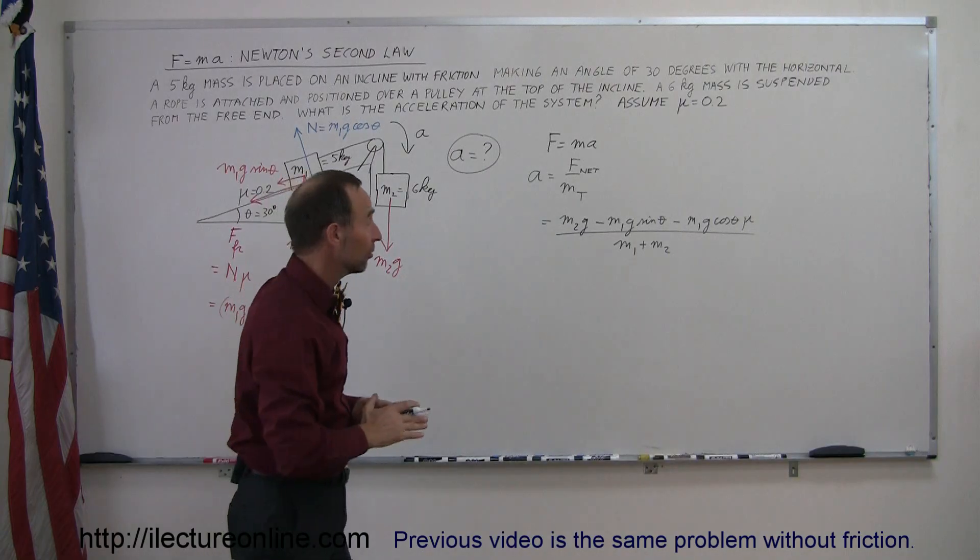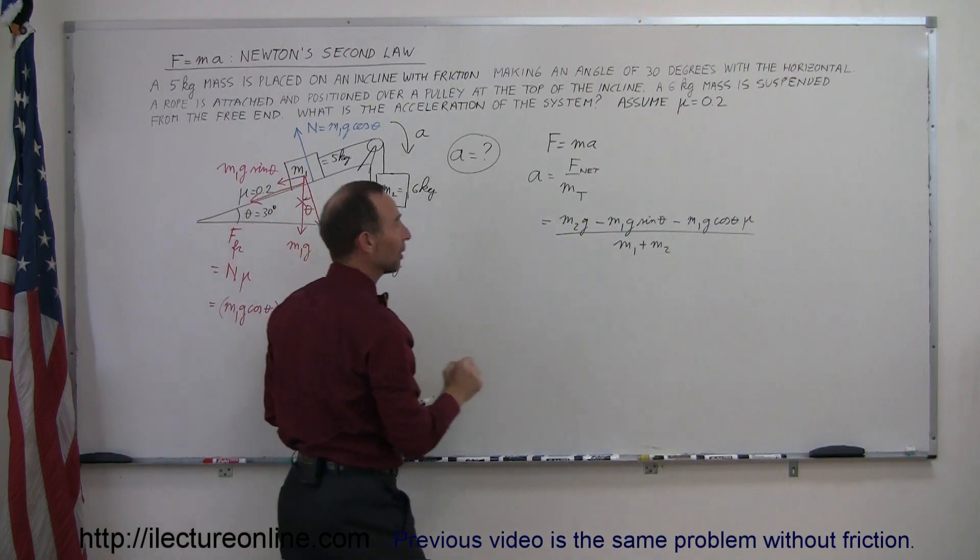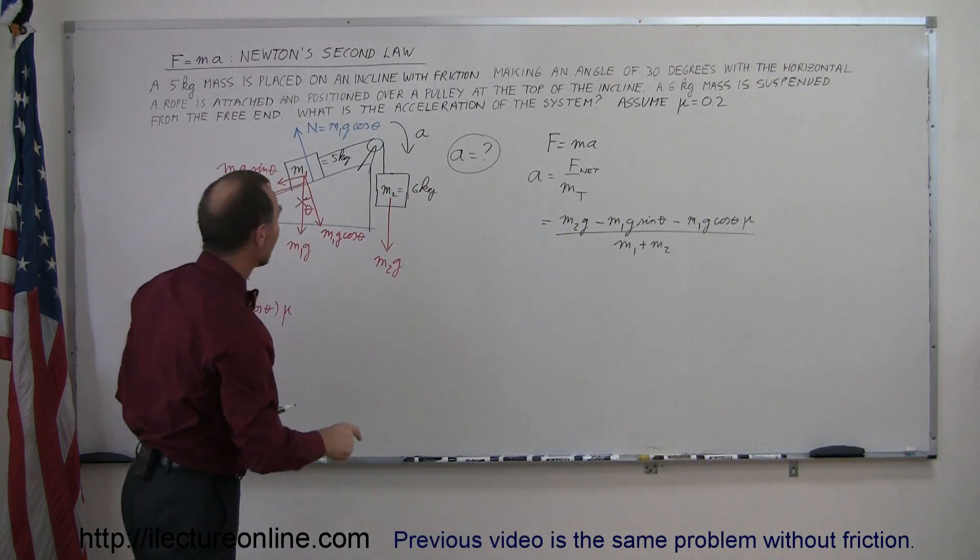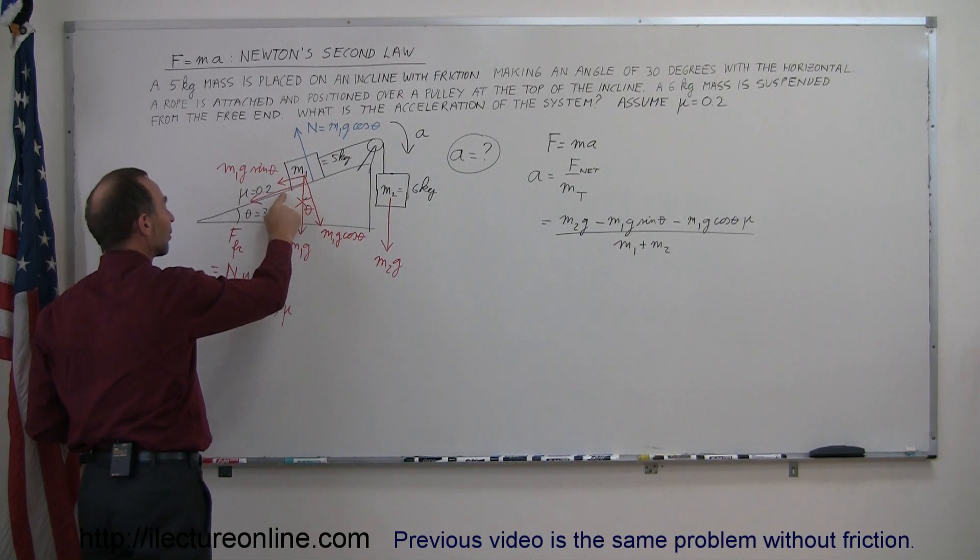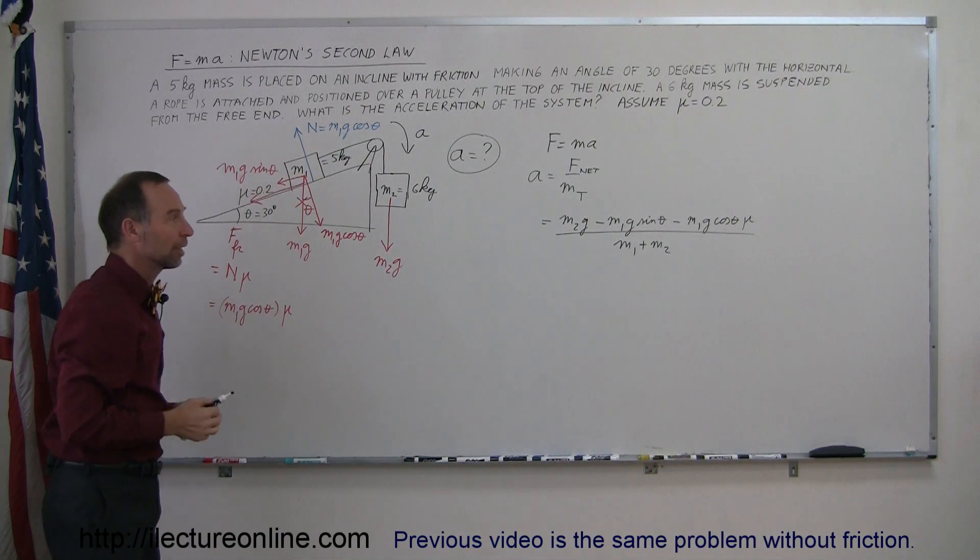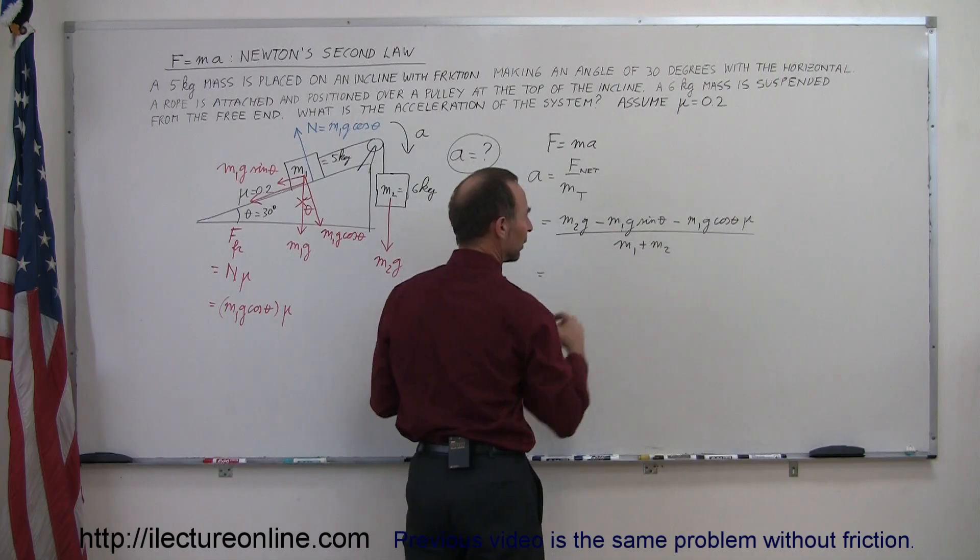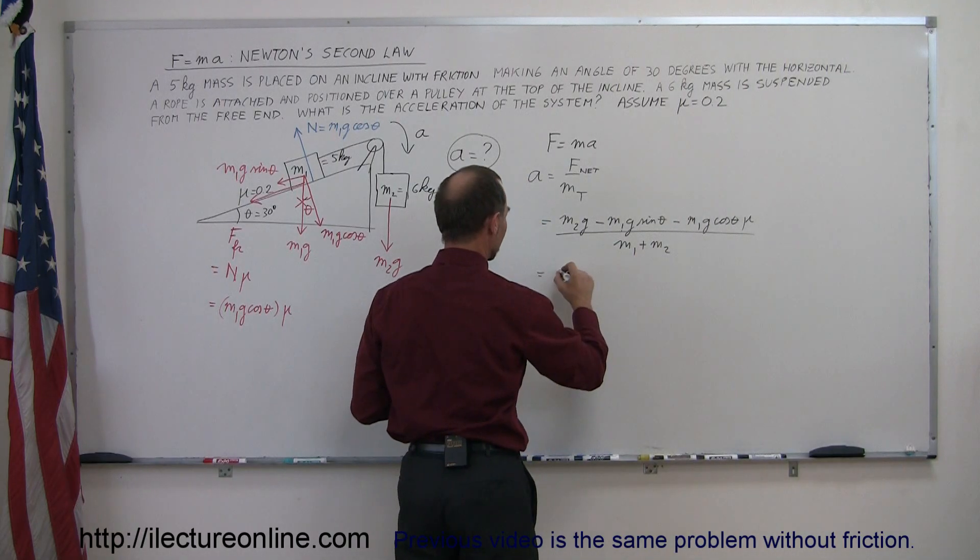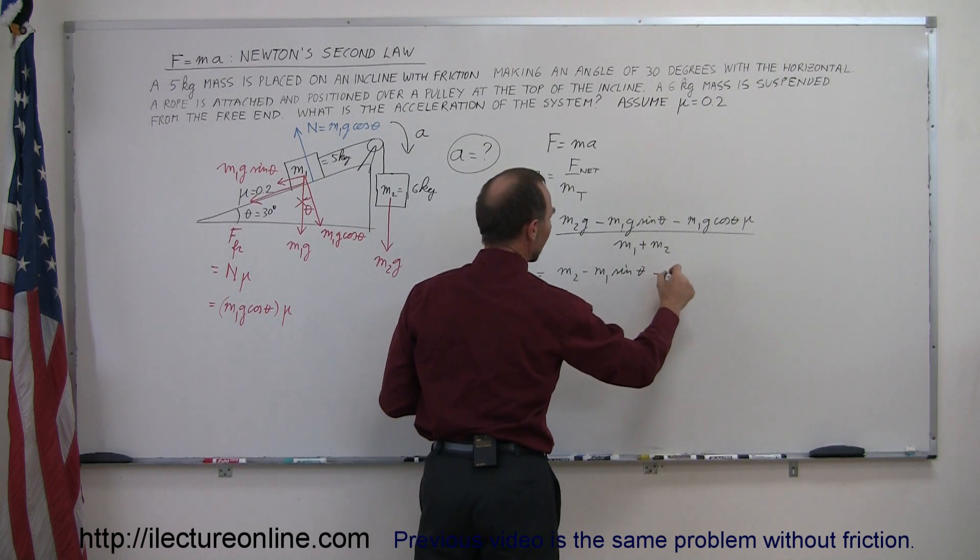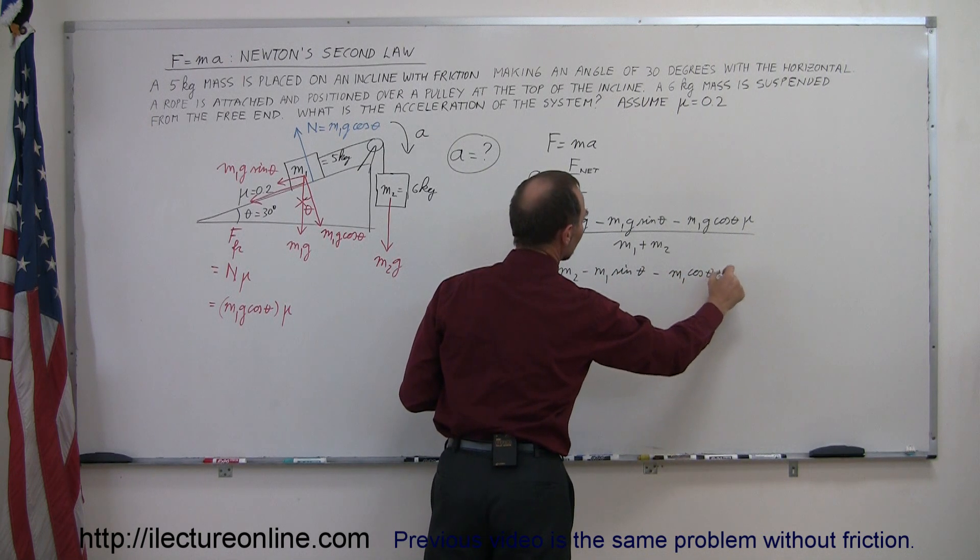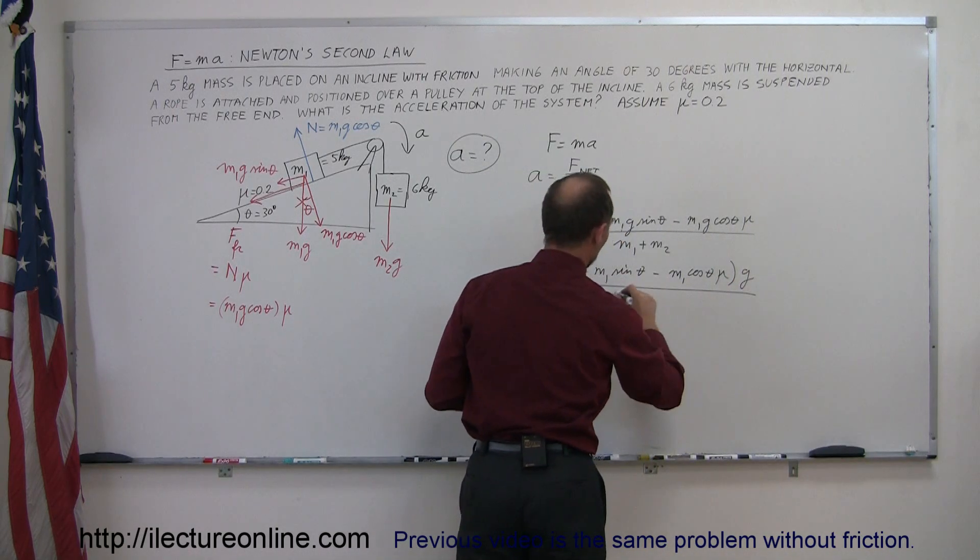You can see that the net force on the system is the force caused by the weight of m2 aiding the acceleration, and then the two opposing forces subtracting from it, which is the weight along the incline of the first mass and then the friction force also opposing that acceleration. To simplify the equation a little bit, I realize that every term has a g in it. I can factor out the g, so we have m2 minus m1 sine of theta, minus m1 cosine of theta times mu, and then this whole numerator times g, all divided by m1 plus m2.